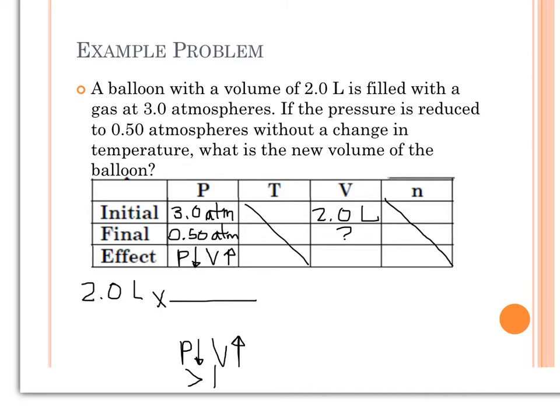So to do that, I could either put three divided by a half, or we could put half divided by three. Which of those is going to give me a number that is bigger than one? And the option that will give me something bigger than one is to put three atmospheres on the top, and a half atmosphere on the bottom.